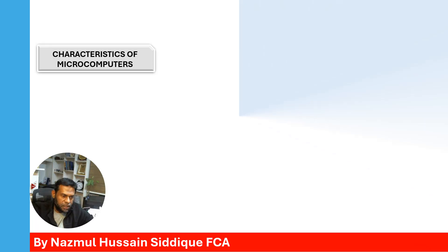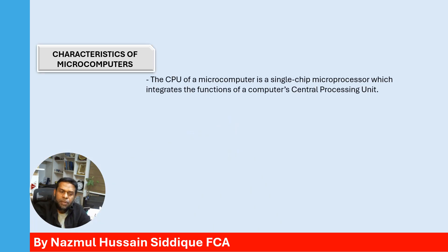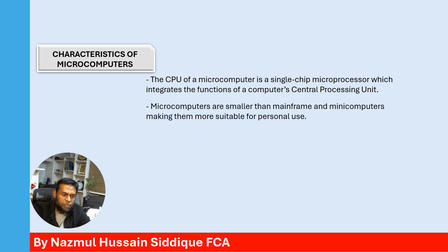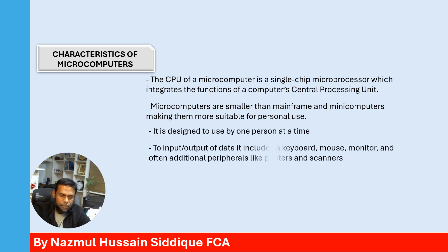The characteristics of microcomputers: The CPU of a microcomputer is a single-chip microprocessor which integrates the functions of a computer's central processing unit. Microcomputers are smaller than mainframe and minicomputers, making them more suitable for personal use. They are designed to be used by one person at a time. For input and output of data, they include a keyboard, mouse, monitor, and often additional peripherals like printers and scanners.